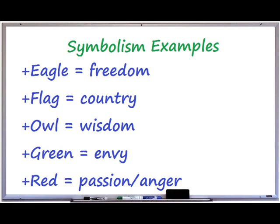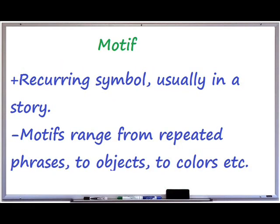If a character is described frequently as wearing a certain color or carrying a certain item, there's a strong chance that it's done on purpose to represent something greater. If a symbol is found throughout a story, film, or series repeatedly, it's technically considered a motif. Motifs could be objects, colors, phrases, or almost anything else that is noticeably recurring in a work of art and appears to symbolize something.